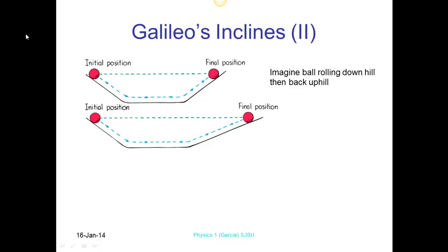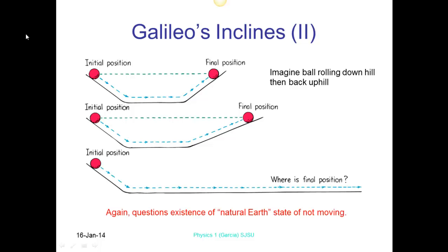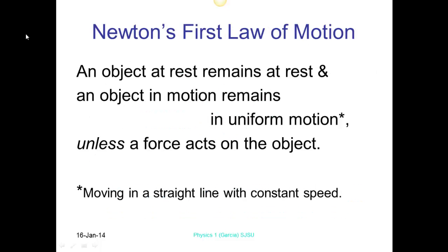When we're looking at this thing, object over here, generally it will go to the same height. It might be just a little bit below the height. Initial position, final position. Aristotle's idea would be that this would actually stay stationary because it's going to stop. That's its natural state of motion. We know that it actually will roll down the hill and roll for a certain amount, depending on how high the hill is.